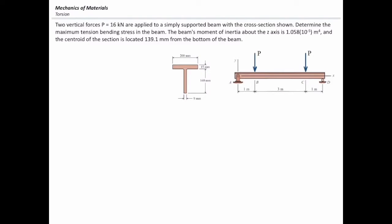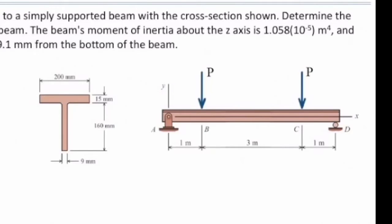The moment of inertia about the z-axis is given, and the centroid of the T-section is located 139.1 mm from the bottom of the beam. There are three steps to determine the answer to this problem. In the first step, we need to determine the maximum bending moment by constructing the moment and shear diagram. To do that, we need to determine the reaction forces.